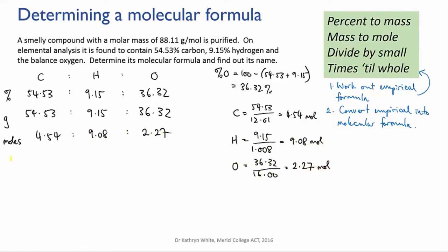Which gives me a mole ratio of 4.54 moles of carbon to 9.08 moles of hydrogen to 2.27 moles of oxygen. Now we divide through by 2.27, which is the smallest of the three numbers, to simplify the ratio, and that gives us 2 to 4 to 1, which is a whole number ratio so it doesn't need any further work. So our empirical formula is C2H4O.